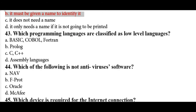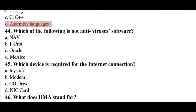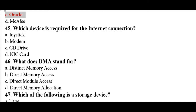Low-level programming languages are assembly-level languages and machine language. Other languages like C, C++, Prolog, and BASIC are high-level languages. Oracle is not an antivirus — it is a software company or database product. McAfee and NAV are examples of antivirus software.